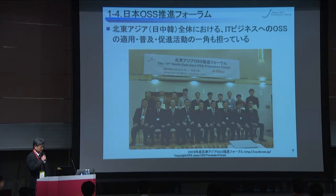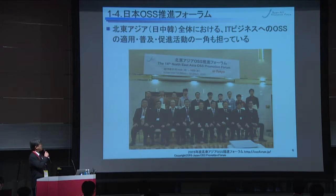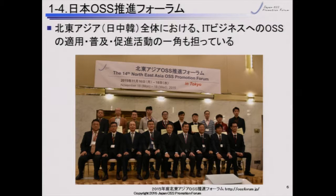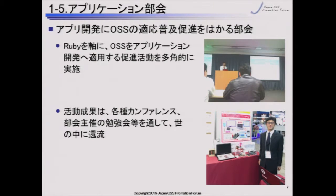Today, we are going to present the result of our development. Our activities are in Japan, but there are counterparts in China and Korea, and the umbrella forum is called the North Eastern Asia OSS Promotion Forum. This convention was held last year with members from different countries. We, in the application subcommittee, have been focusing on Ruby for application development from the beginning, and achievements are presented in conferences like this or our own study sessions to share what we have done with others.